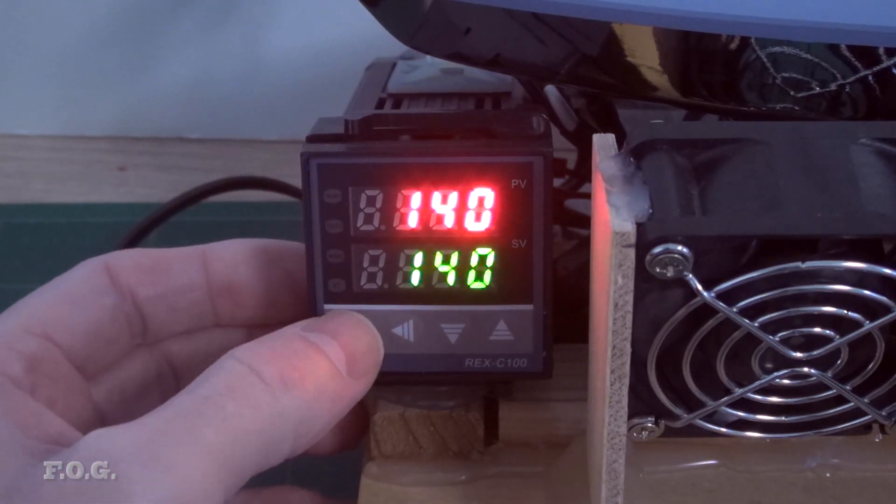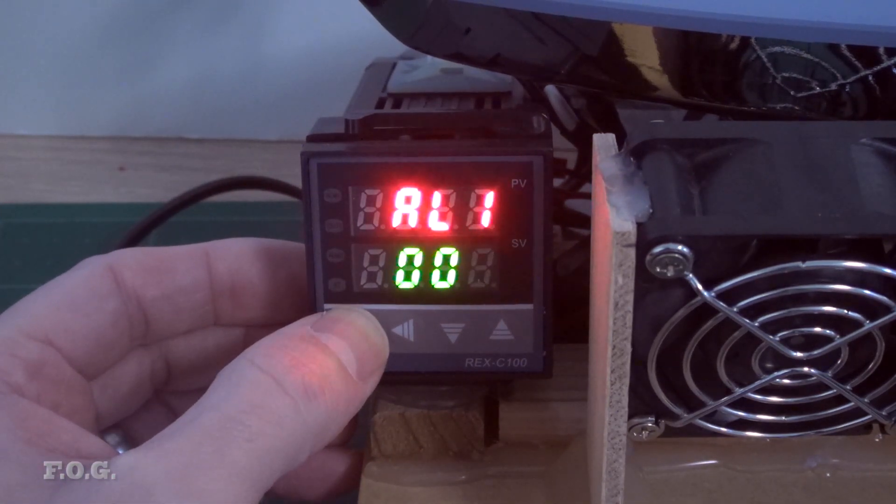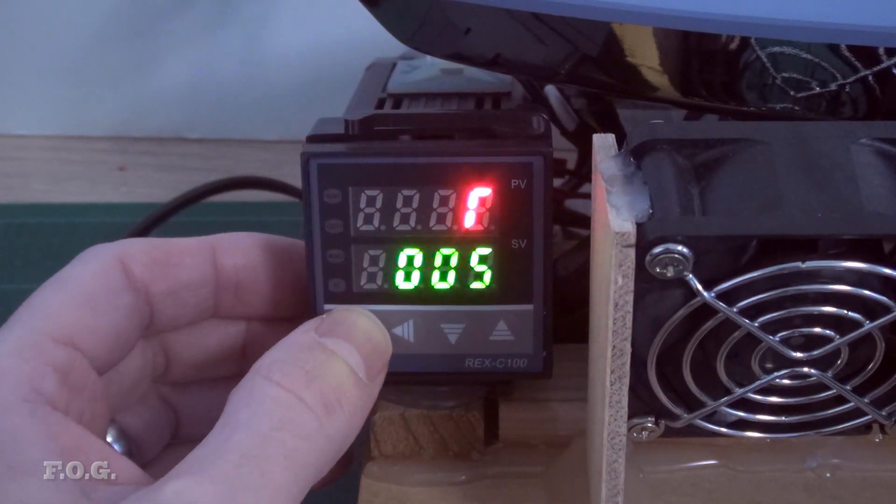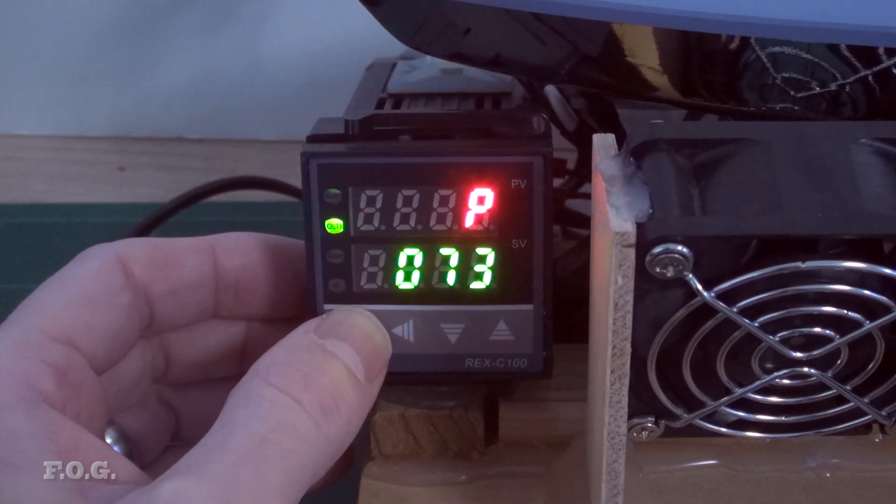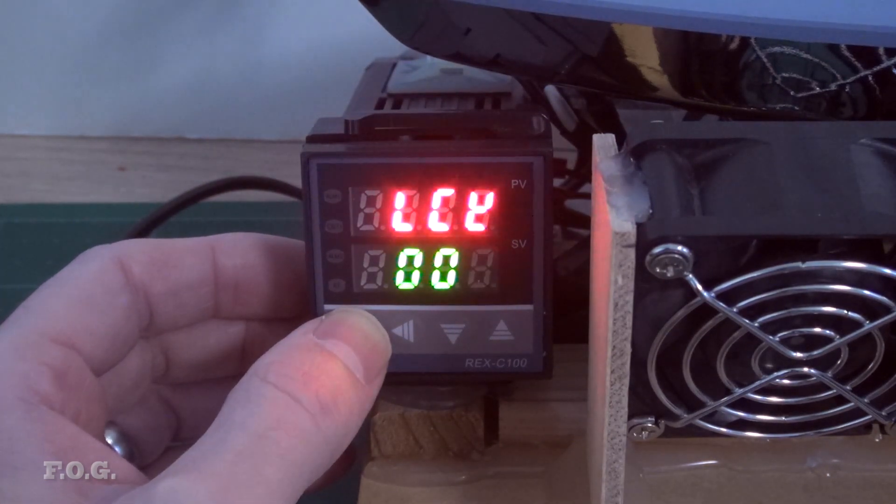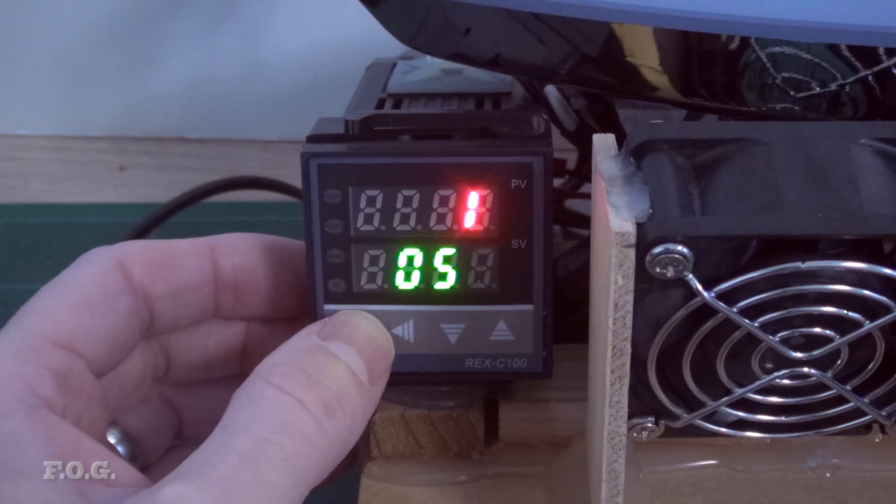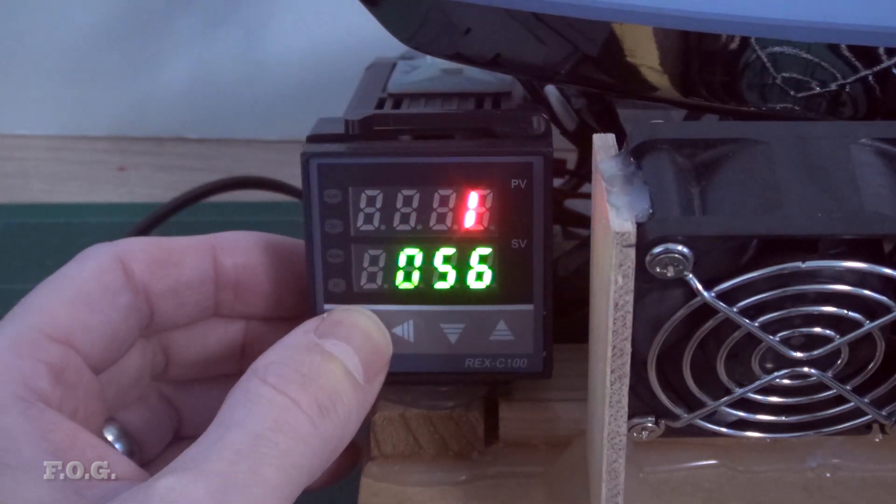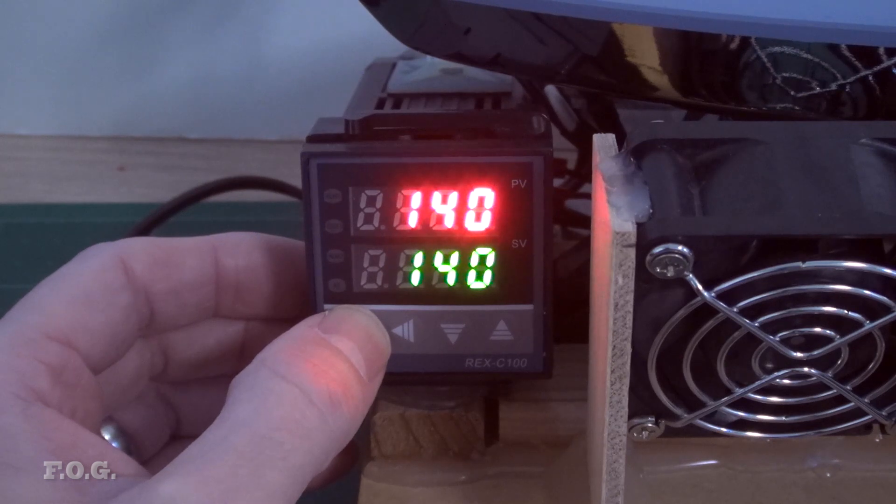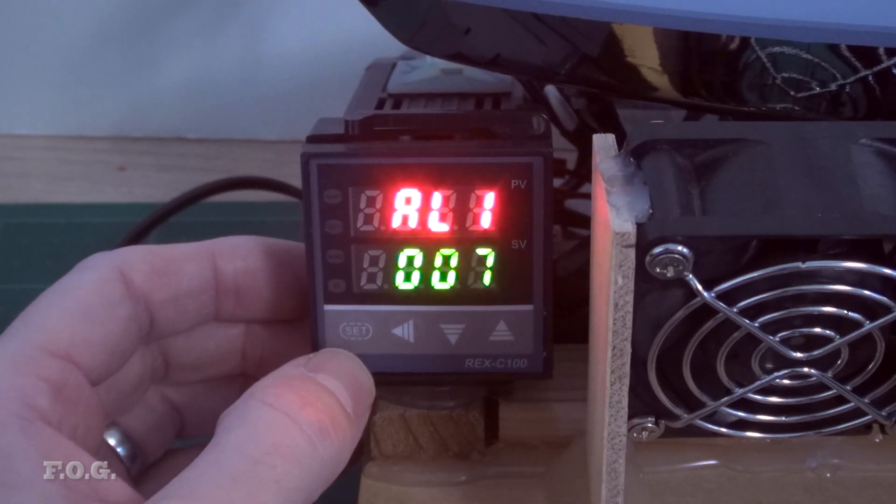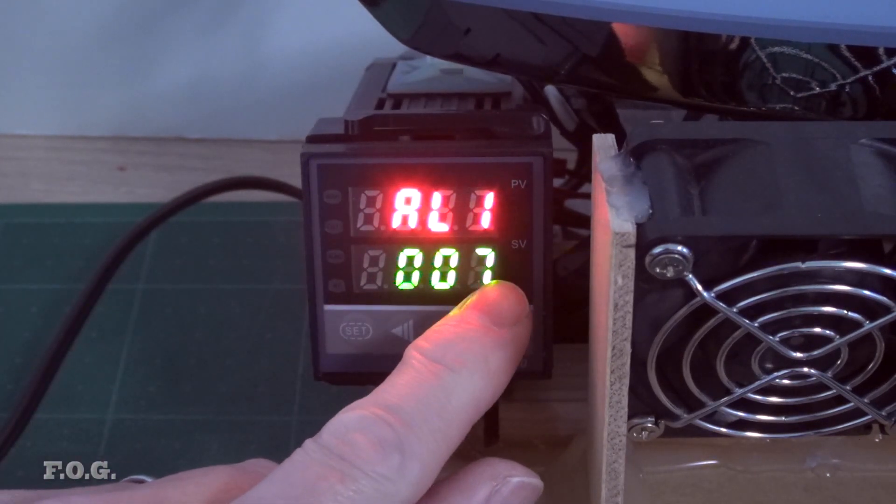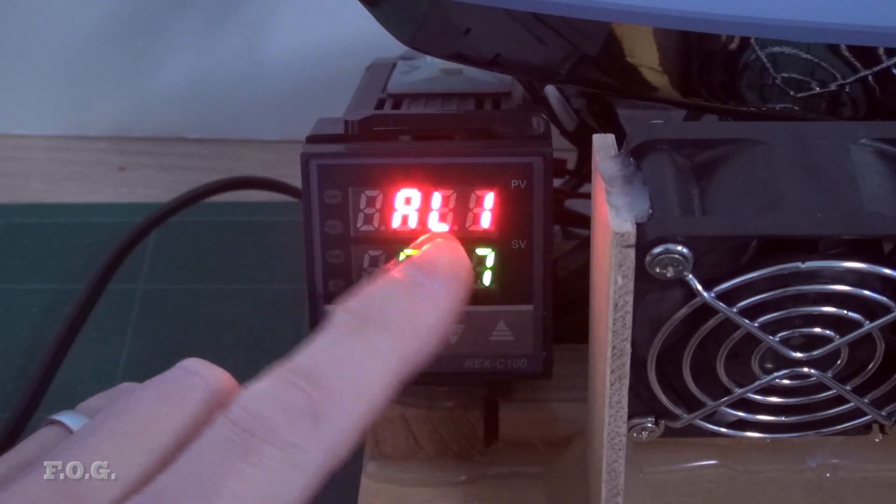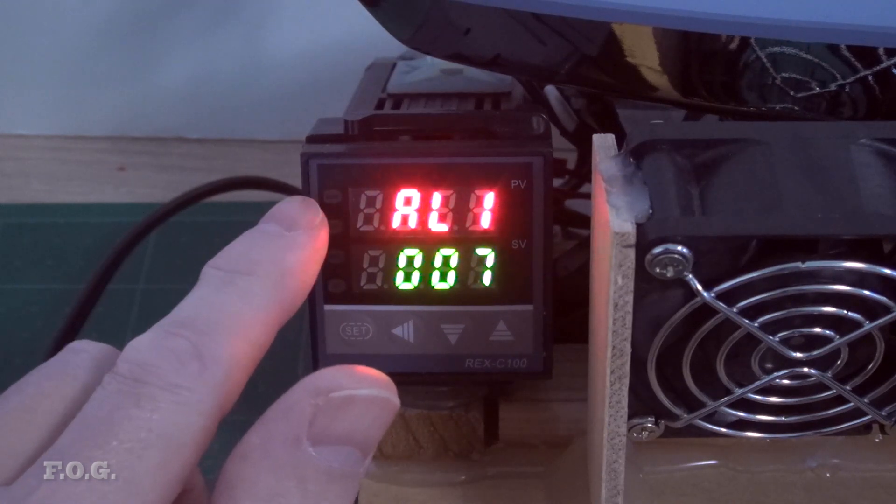To get into the settings you hold the set button for two seconds, and then by pressing the set button you can rotate through and see all the settings that are available. So let me explain them as I understand them. Obviously getting the manual and checking them itself is highly recommended because maybe I interpret something wrong. When we come into the settings in the first place we get this alarm settings, and this is set at seven.